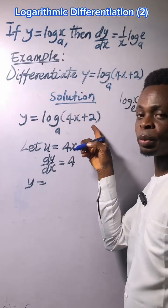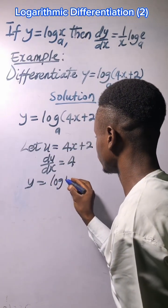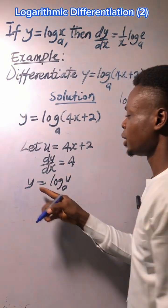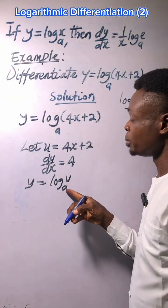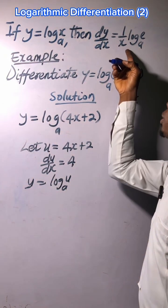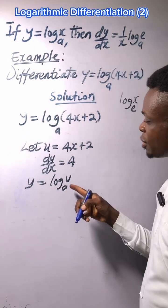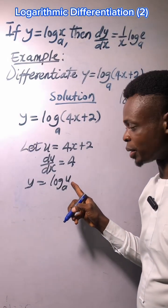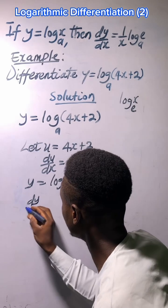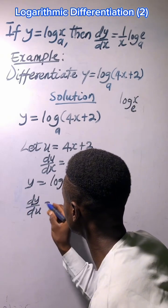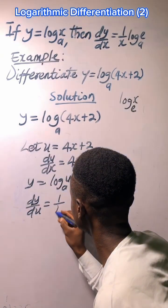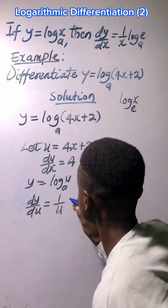Because we let u be this, y equals log u in base a. In differentiating log u in base a, we are going to have the result as this. The u here can be any letter of the alphabet. So we have dy/du equal to one all over u, as in one over x, then log e in base a.